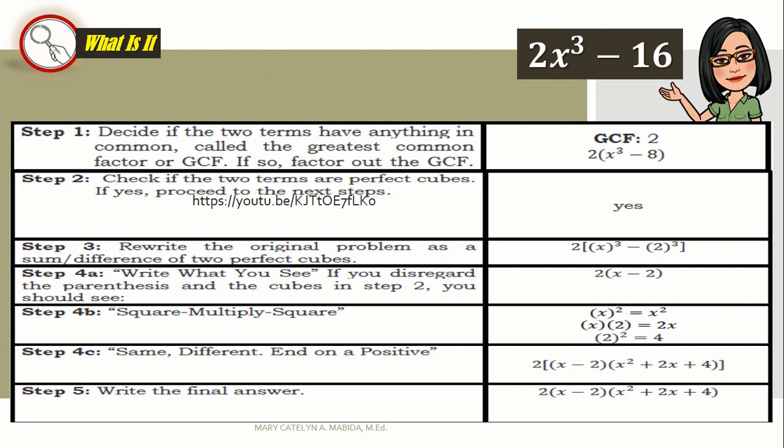Let's go to example number two. Again, decide if these two terms have anything in common called the GCF. And then, factor out the GCF. We have two times the quantity of x cubed minus 8. Is x cubed minus 8 perfect cubes? Yup! They are! Then, we proceed to step number three.